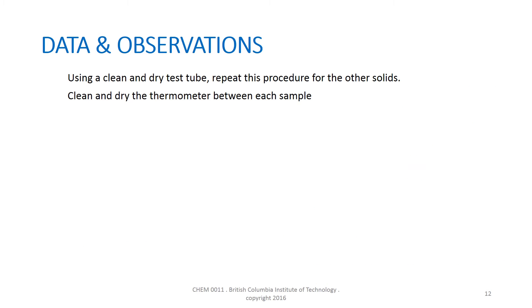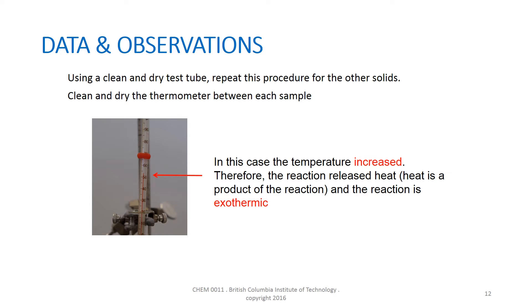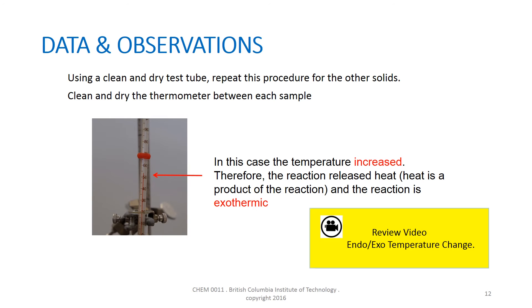Using a clean and dry test tube, repeat this process for all samples. To prevent contamination, clean and dry the thermometer between each sample. In this case, the temperature increased to about 53 degrees Celsius. This is an example of a reaction that released heat and would be an exothermic reaction; heat would be included as a product in the chemical reaction. It may be useful to review the video on endothermic-exothermic temperature change.